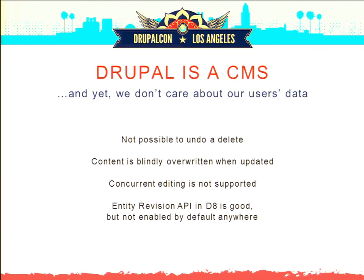After all, Drupal is a CMS. We're supposed to manage our content. It's not possible to undo a delete. At the moment, we are blindly overwriting content when we're updating. Your changes can be gone in a second — if you do the wrong edit, if you edit the wrong node, if you don't have revisions turned on, they're gone forever. It could be big changes someone worked on for a long time. The answer is not to revert to your backups. We should do better than that. And concurrent editing is not supported. These are things that a content management system like Drupal perhaps should be able to support.